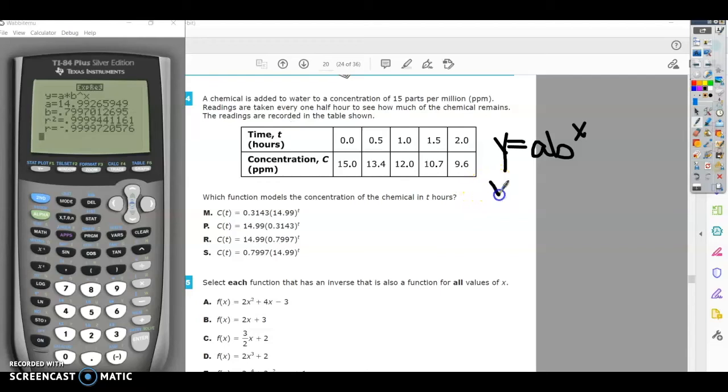We have a equals 14.99, b equals 0.7997, and r equals -0.99999. That is really good regression, which means these points fall very close to this equation.